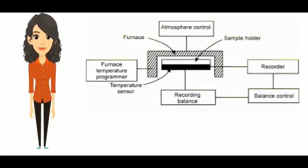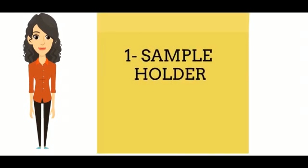This is the block diagram of TGA showing basic apparatus. In sample holder, we put our sample which is attached with the recording balance.